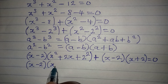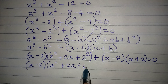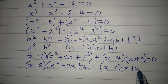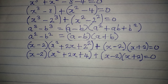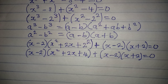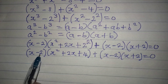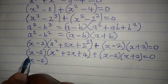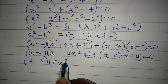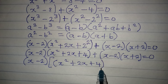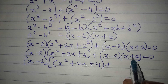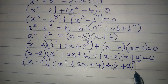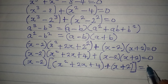So we have (x minus 2)(x squared plus 2x plus 4) plus (x minus 2)(x plus 2) equal to zero. Now I notice that (x minus 2) appears in both terms, so I can factor it out as a common factor, giving x minus 2 times the quantity [(x squared plus 2x plus 4) plus (x plus 2)], equal to zero.